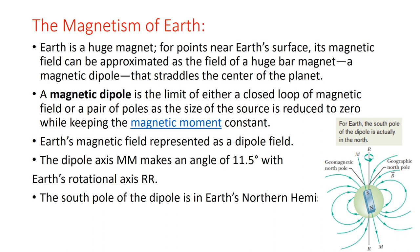From the Earth's center, the Earth is tilted. An axis passes through the center which we call MM, and this axis is called the dipole axis. The magnetic poles are offset from the Earth's axis of rotation by 11.5 degrees. So the magnetic dipole axis MM makes an angle of 11.5 degrees with the geographic axis of rotation.